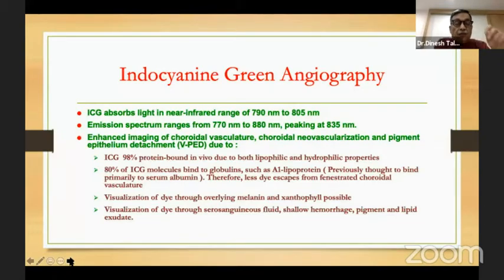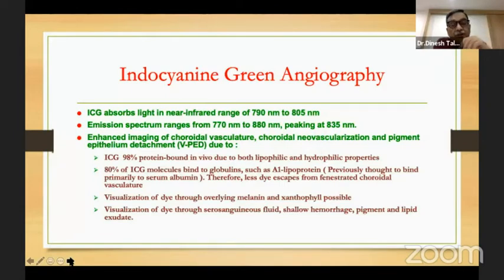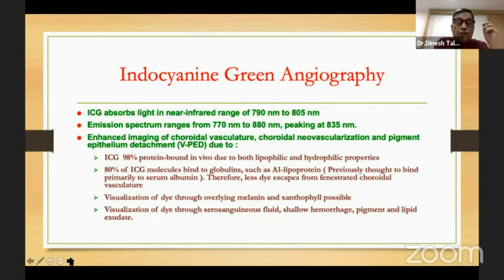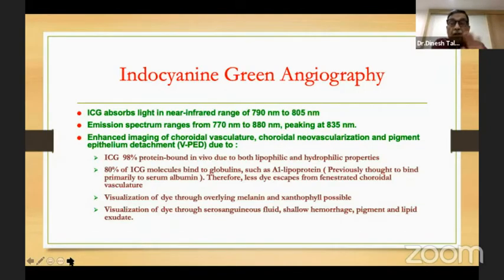Because of this protein binding and because of the wavelength, very little dye escapes from the fenestrated choroidal vasculature. The visualization of dye through overlying melanin and xanthophyll is possible, and it's also possible through serosanguinous fluid, a shallow hemorrhage, or some pigment — though not completely.